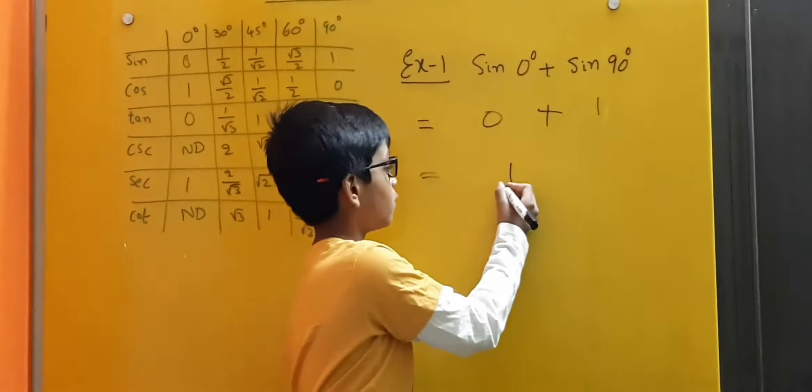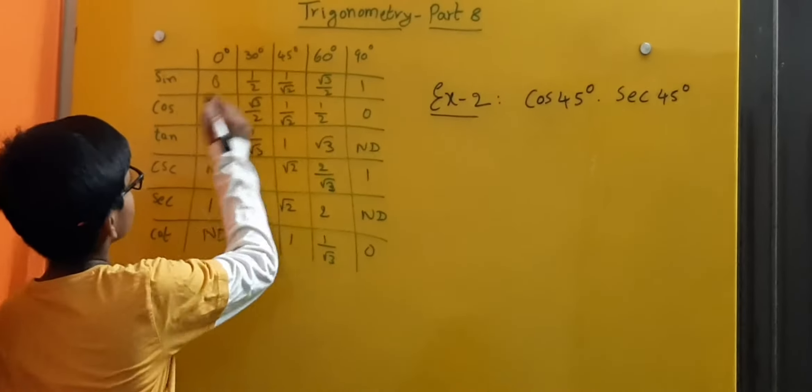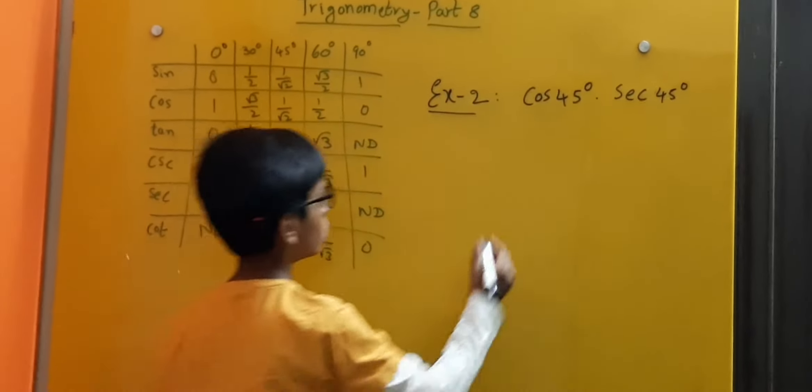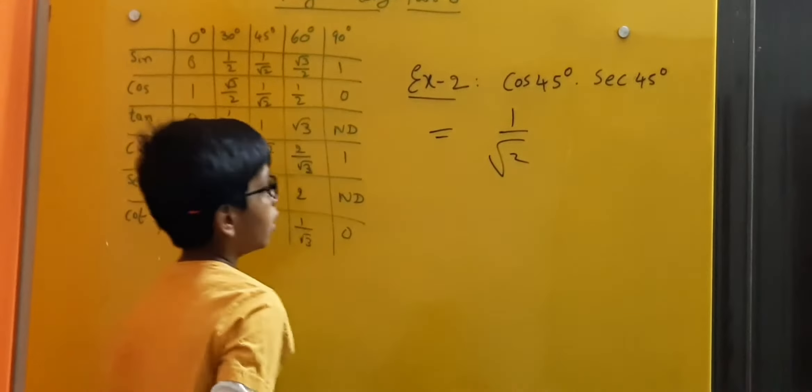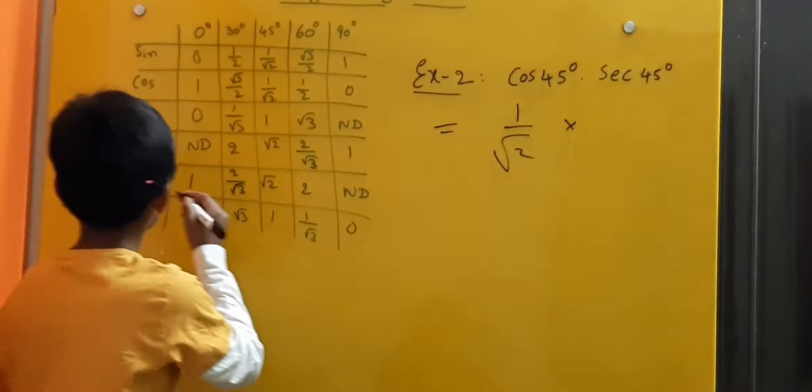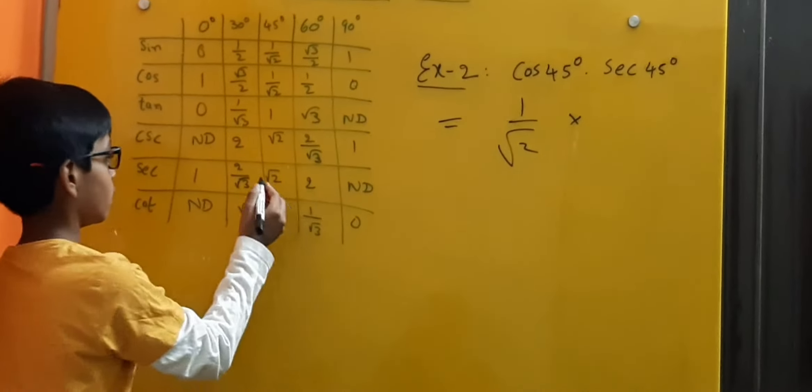Now let us solve the second example: cos 45 into secant 45. Here, cos 45 degrees is equal to 1 by root 2. Cos 45 into secant 45 degrees is equal to root 2.